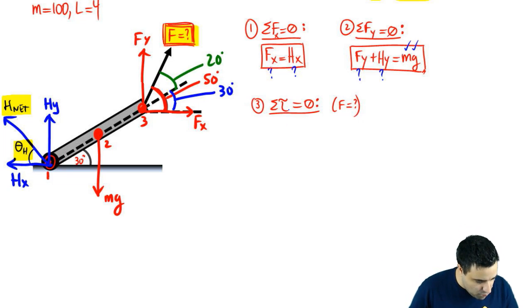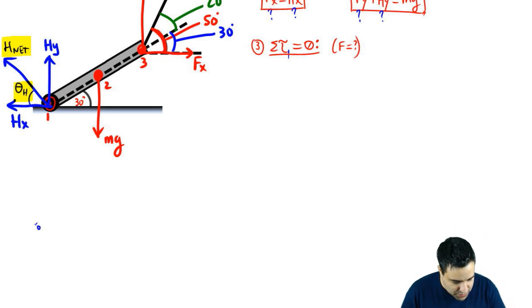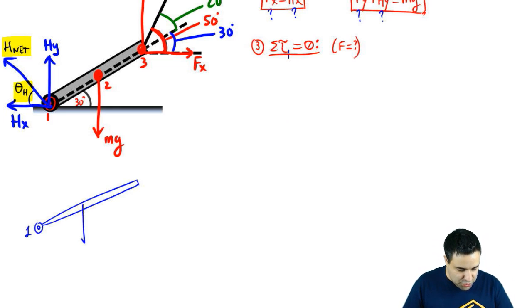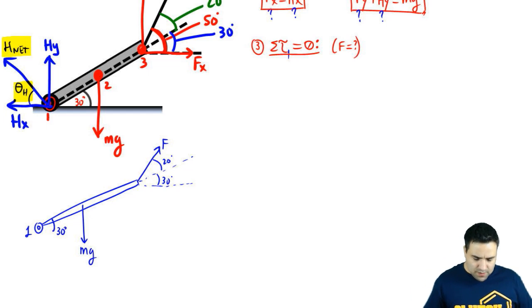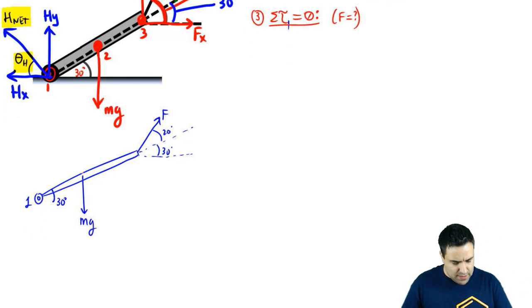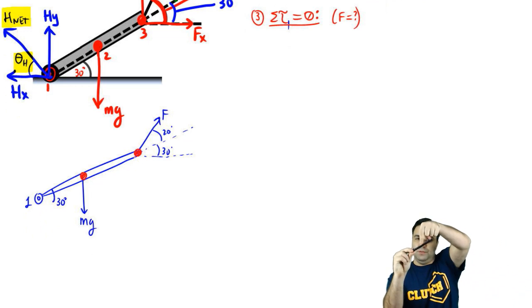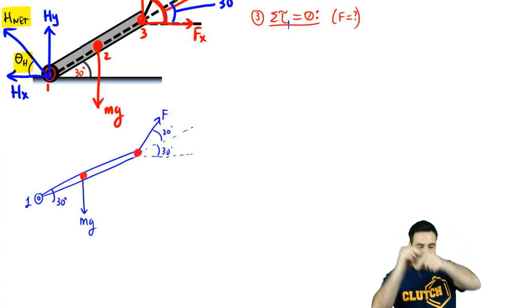Torque about point one. And this looks like this. Here's point one. Let's put a little bar here. And I have MG going down. And I have F going up like this. This is 30 right here. This here is 30. And this here is 20. So let's figure out which way these torques, which torques, what kind of torques are produced here. If you have the bar like this and MG pushes it down, this is going to be a clockwise torque, so it's negative.